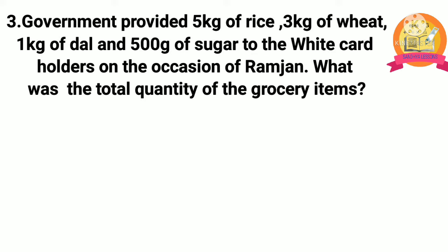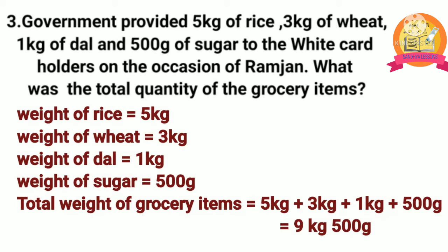Third problem: the government provided 5 kg of rice, 3 kg of wheat, 1 kg of dal, and 500 g of sugar to white card holders on the occasion of Ramzan. What was the total quantity of grocery items? Solution: weight of rice is 5 kg, wheat is 3 kg, dal is 1 kg, and sugar is 500 g. Total weight is 5 kg plus 3 kg plus 1 kg plus 500 g, which equals 9 kg 500 g.